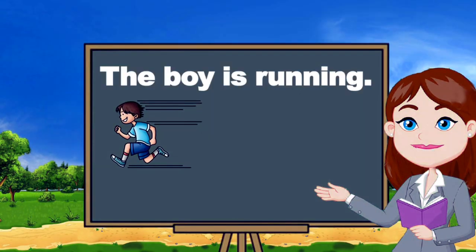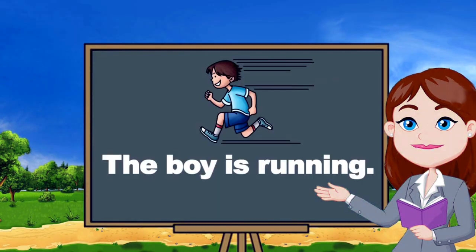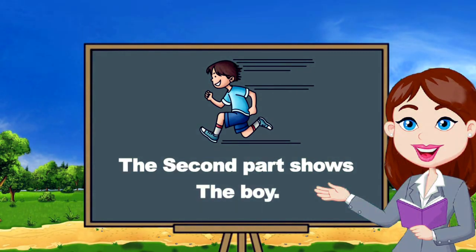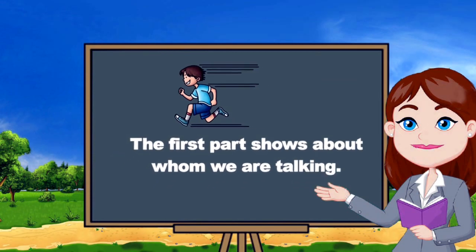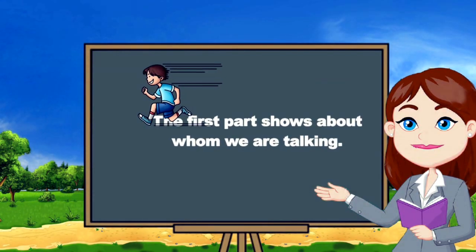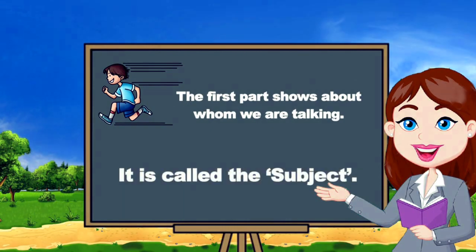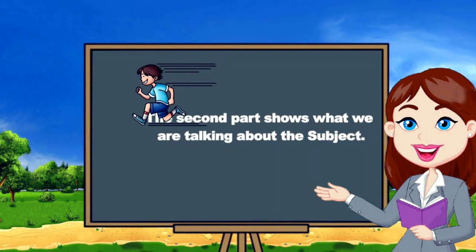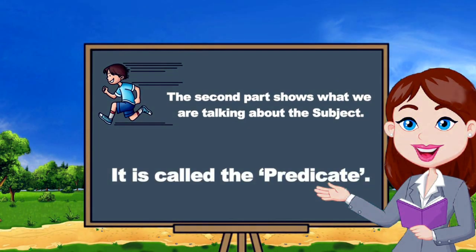Let's see the sentence: 'The boy is running.' This sentence can be divided into two parts. The first part shows the boy — it shows about whom we are talking. That is called the subject. The second part shows what he is doing — what we are talking about the subject. That is called the predicate.